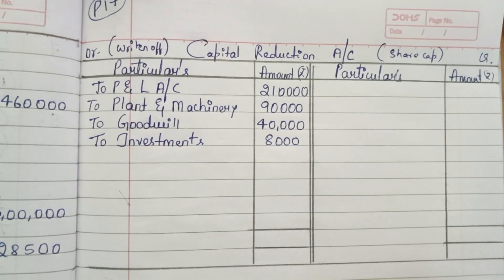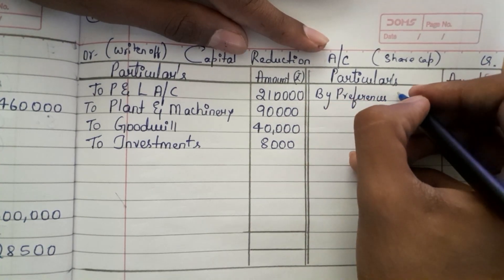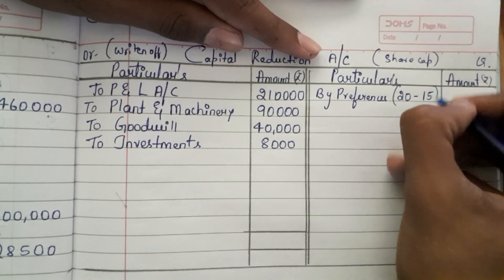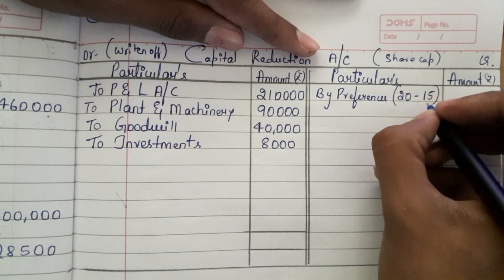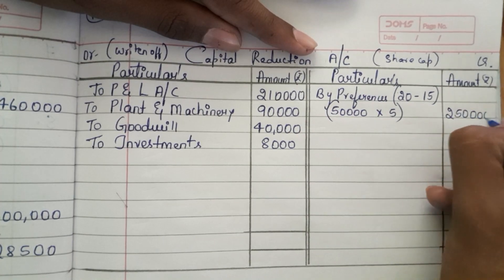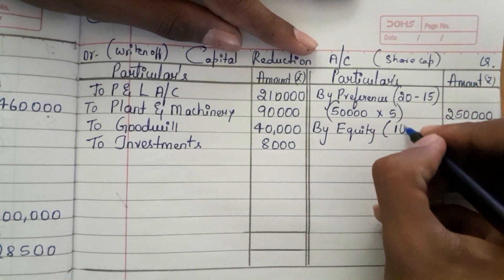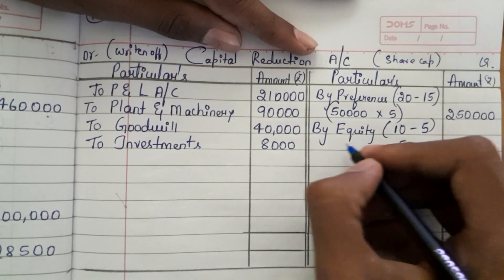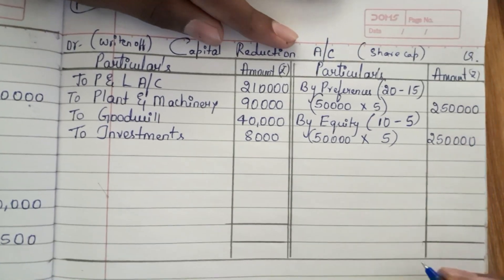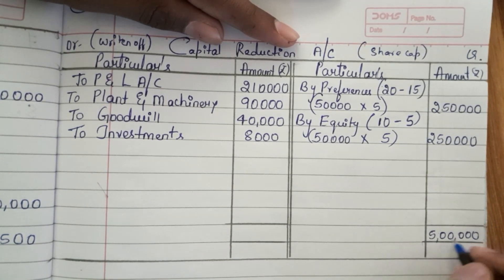Now how was the reduction made? By converting preference shares. We are converting the 20 rupees value preference shares into 15 rupees, so 5 rupees they are sacrificing — 20 minus 15 is 5. Total 50,000 preference shares into 5 rupees means 2 lakh 50,000. Second, we are converting ordinary shares, that is equity shares — value 10 rupees reduced to 5 rupees, so 5 rupees they are sacrificing. Total 50,000 equity shares into 5 rupees means 2 lakh 50,000. Adding these two: 2 lakh 50,000 plus 2 lakh 50,000 equals 5 lakh — which is exactly what the court sanctioned.